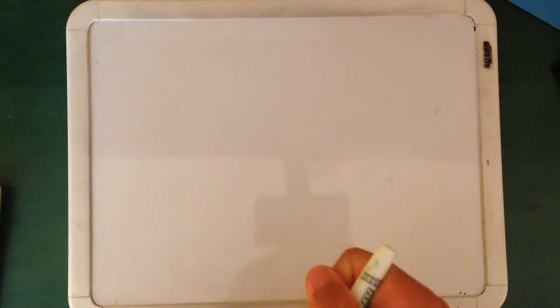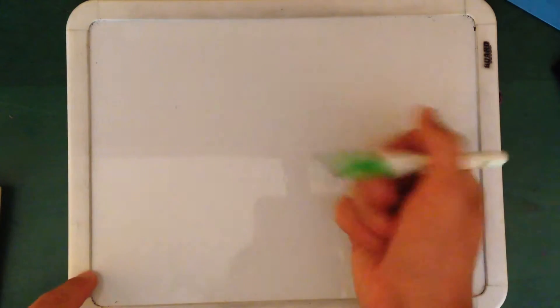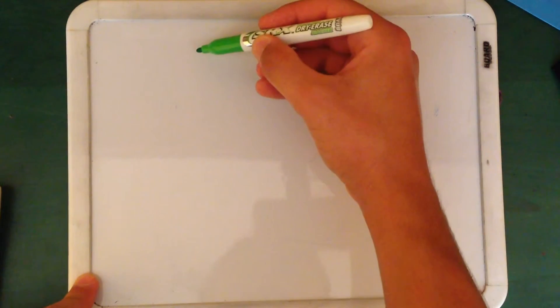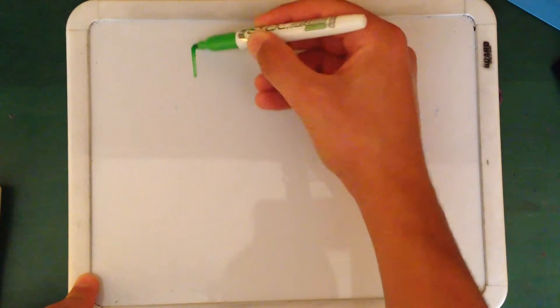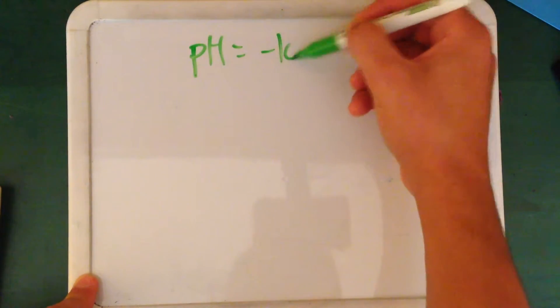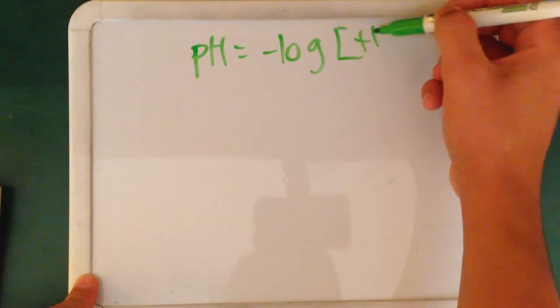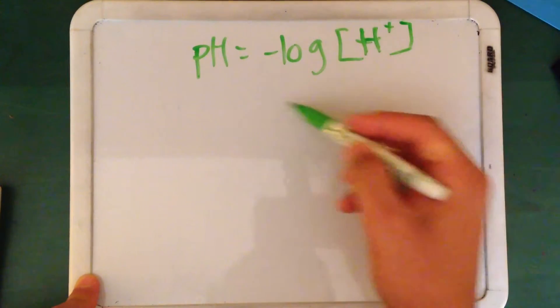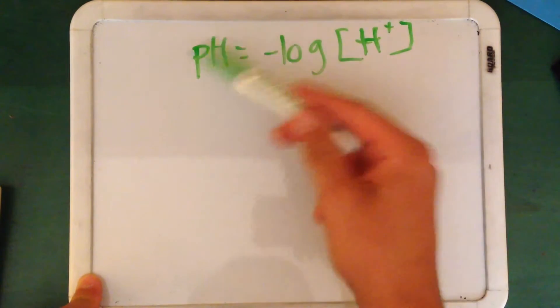And so the formula goes like this. We have to always remember the formula of pH equal to negative log H plus. So if we're given an H plus, all we have to do is just find the negative log of that H plus, and that would be your pH.